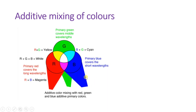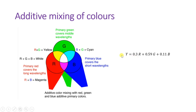Here you can see the three primary colors: red, green, and blue. When you add red and green color it will generate yellow color, as you can see here. When you add green and blue, that will generate cyan color, as you can see here. And when you add red and blue, that will generate magenta color, as you can see here. This is how we can generate different colors by mixing the primary colors in some proportion.